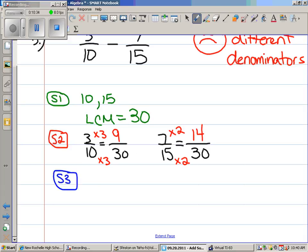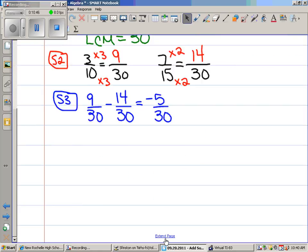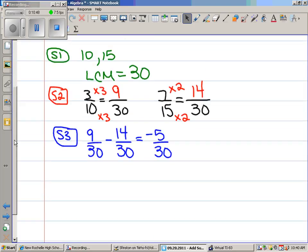And then, step three, we're just going to add or subtract them. Whatever it was calling for. We got nine over 30 minus 14 over 30. Negative five over 30. And then, finally, step four. Does this reduce down into what? Nope. Six. Good. Very nice. That's it.